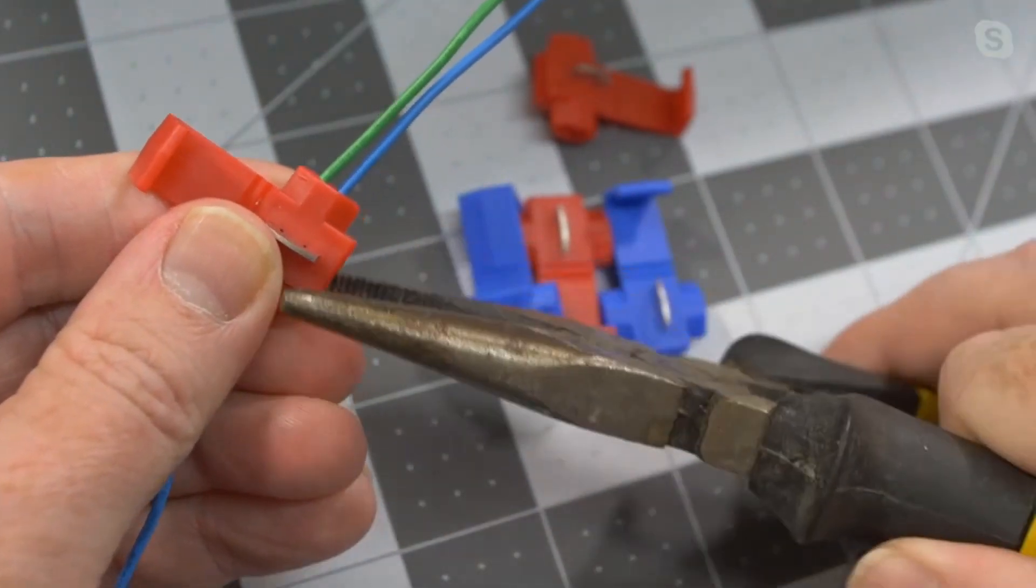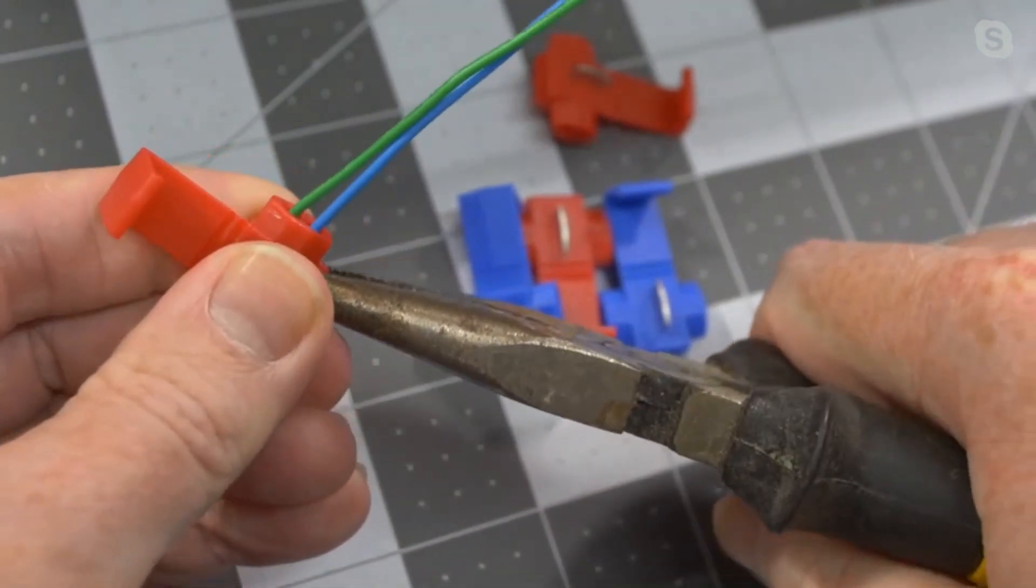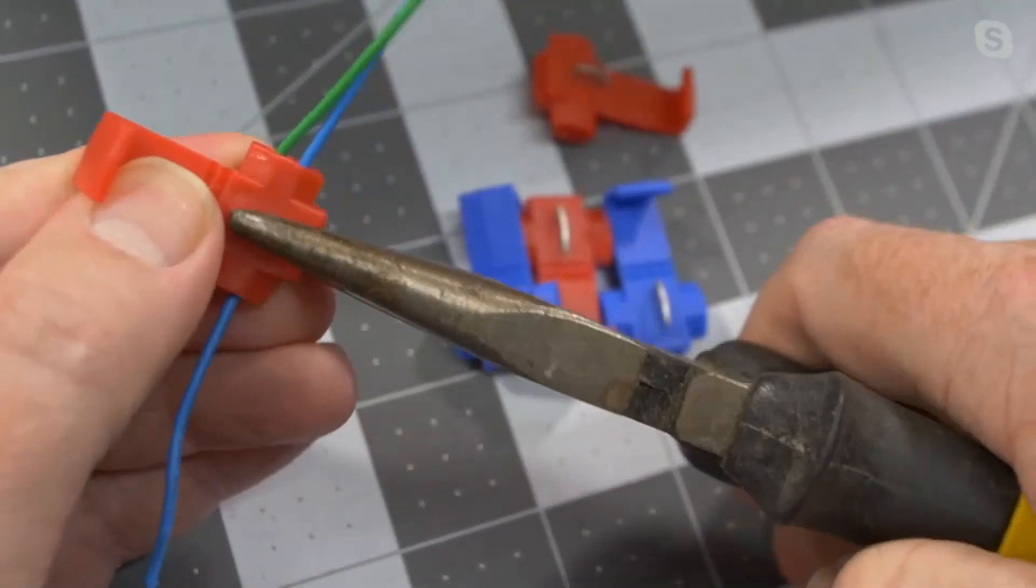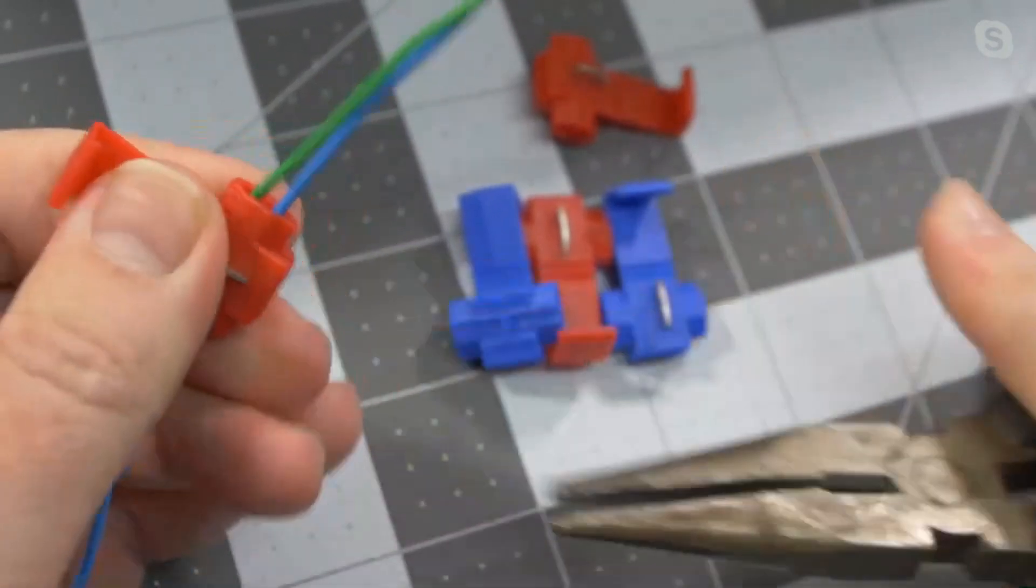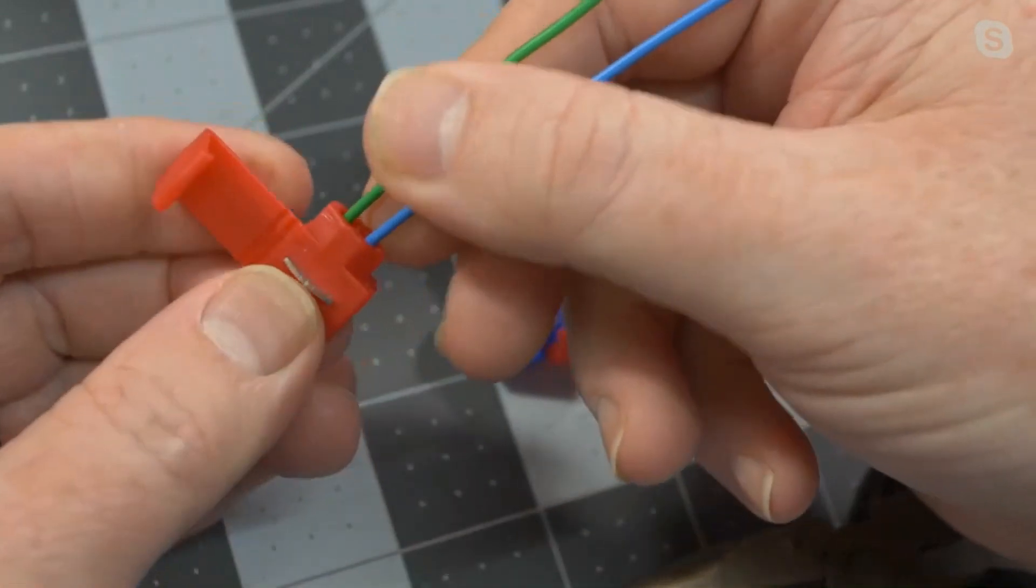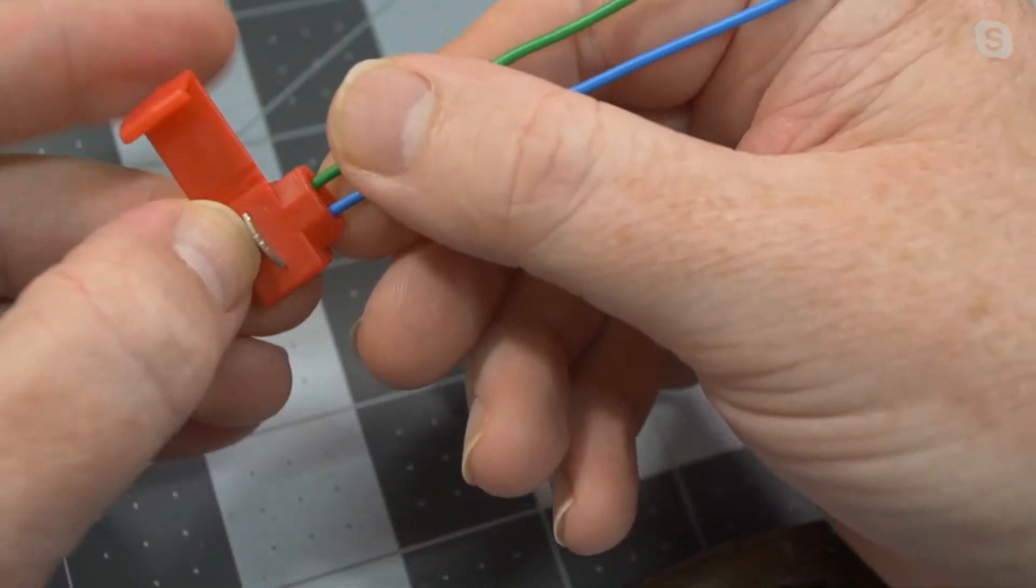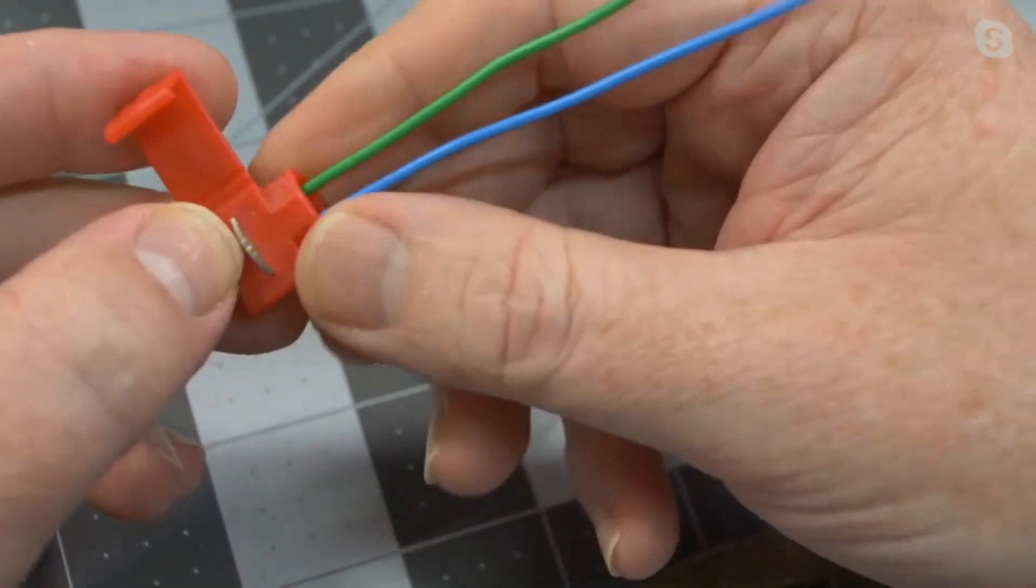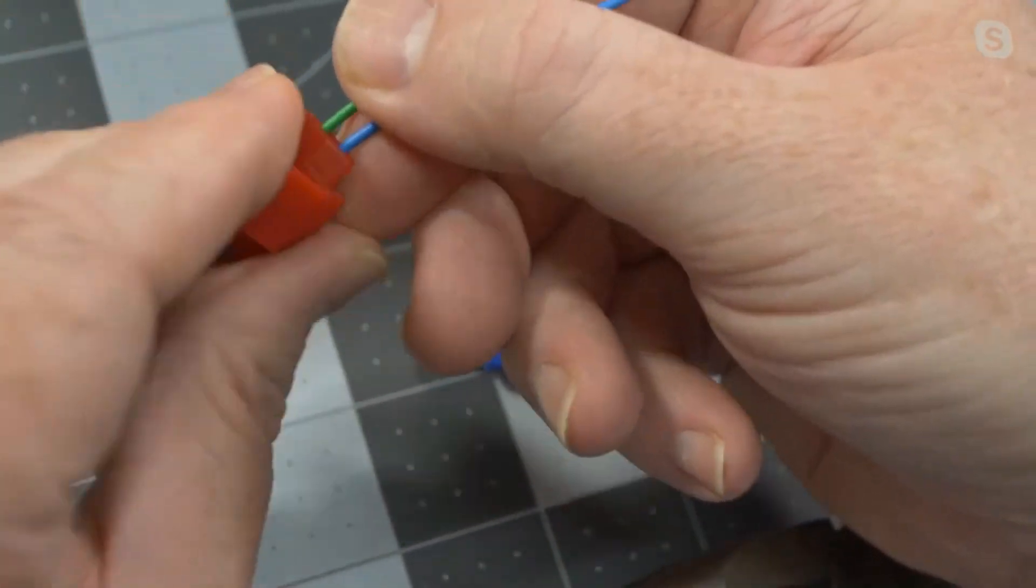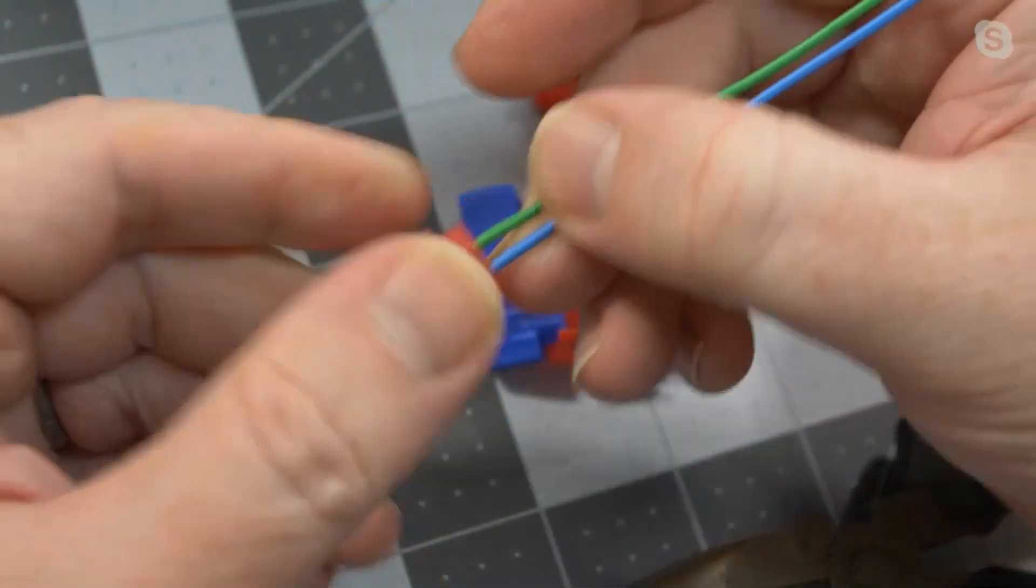I'm going to use a pair of pliers to crimp this down. A little bit more oomph there. Give them a quick tug to make sure that they feel secure. And then you still have this metal piece over the top here. I guess you could use that to check connectivity, but you don't want that to short itself against anything. So then you can flip this cap over it and that will seal it. Very cool.